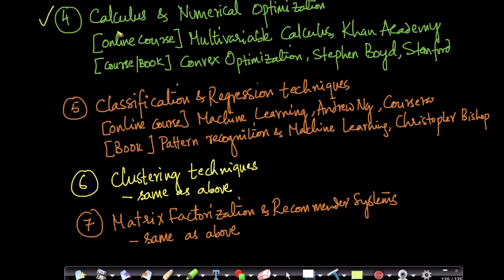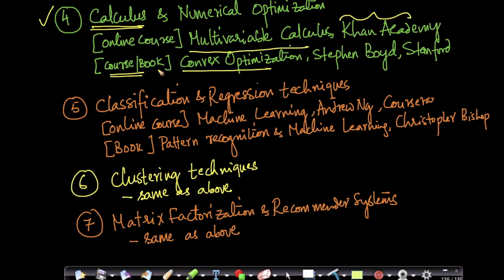The fourth important topic is calculus and numerical optimization. For calculus, you need to know the basics — what is differentiation, what is partial differentiation — you don't need advanced concepts like partial differential equations. There is a Multivariable Calculus course at Khan Academy, which is very good. For more rigorous study, there is an online course and book called Convex Optimization by Professor Stephen Boyd at Stanford. The first few chapters give a very intuitive understanding of how optimization works, and I learned a lot from Boyd's book in grad school.